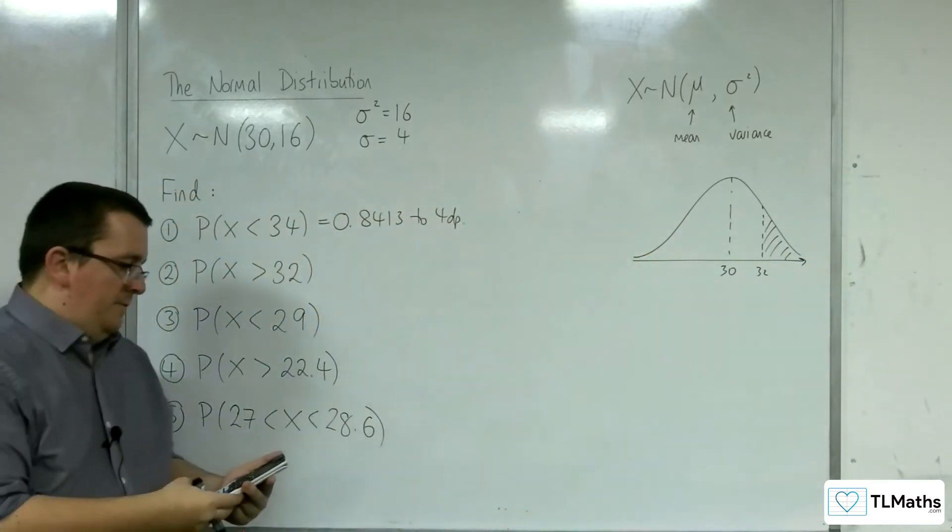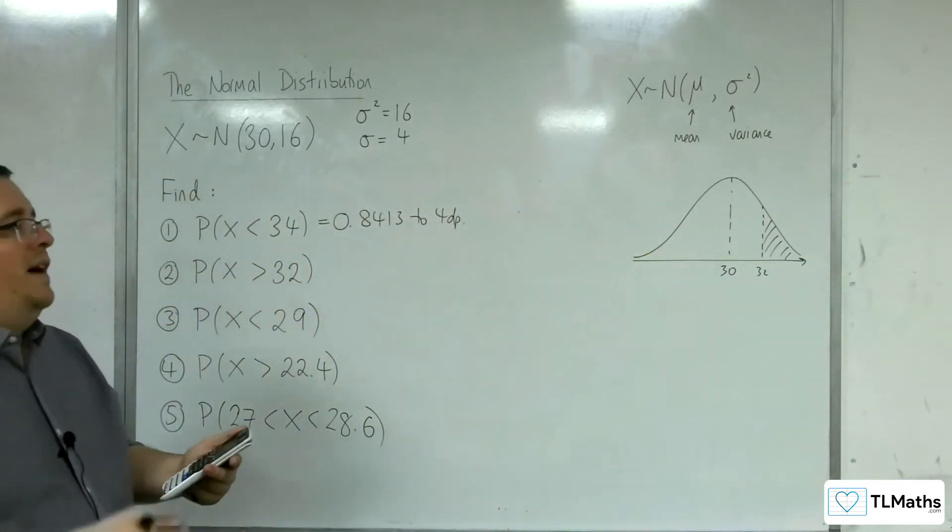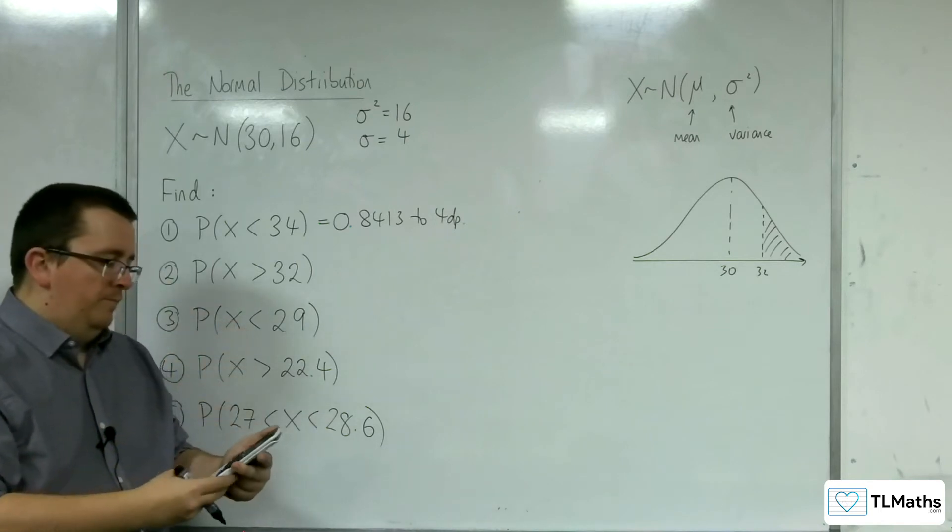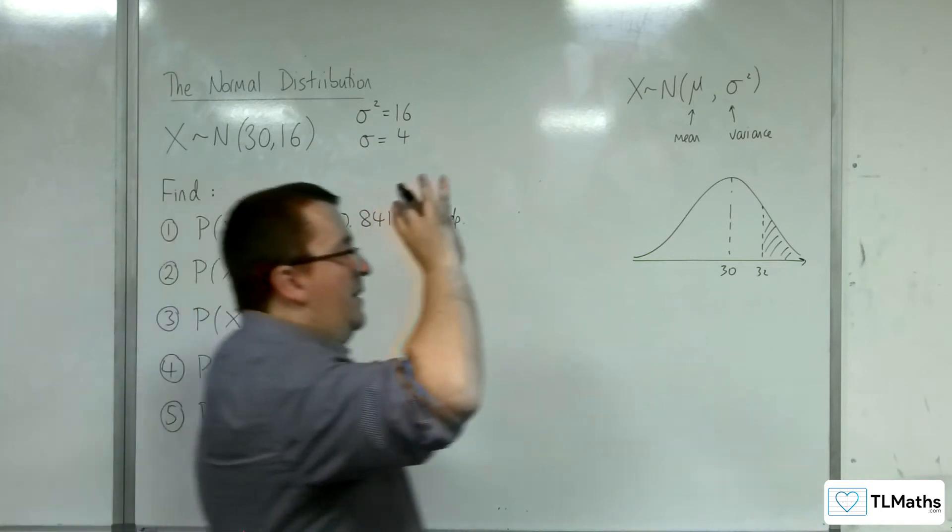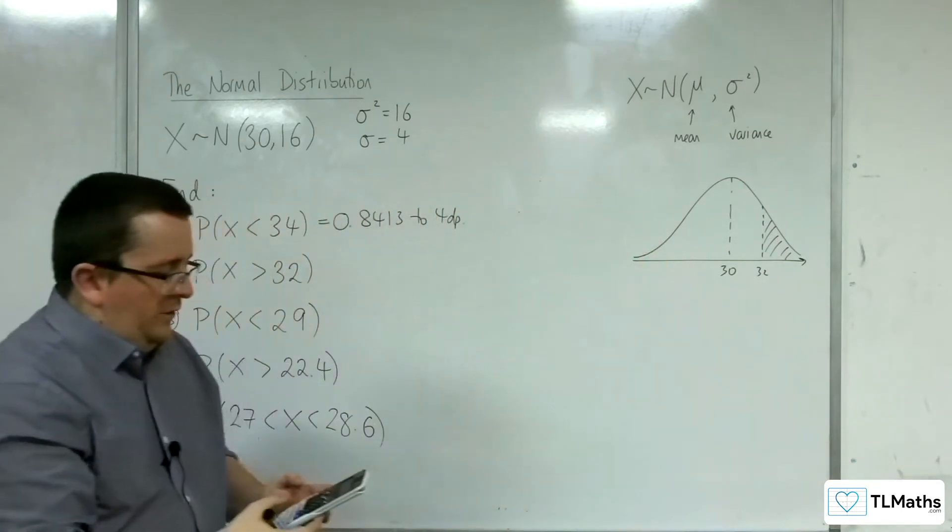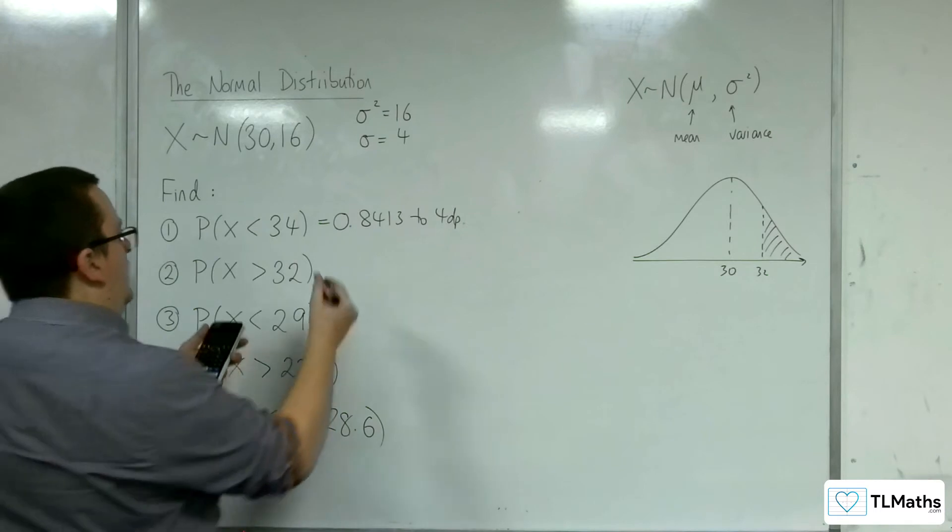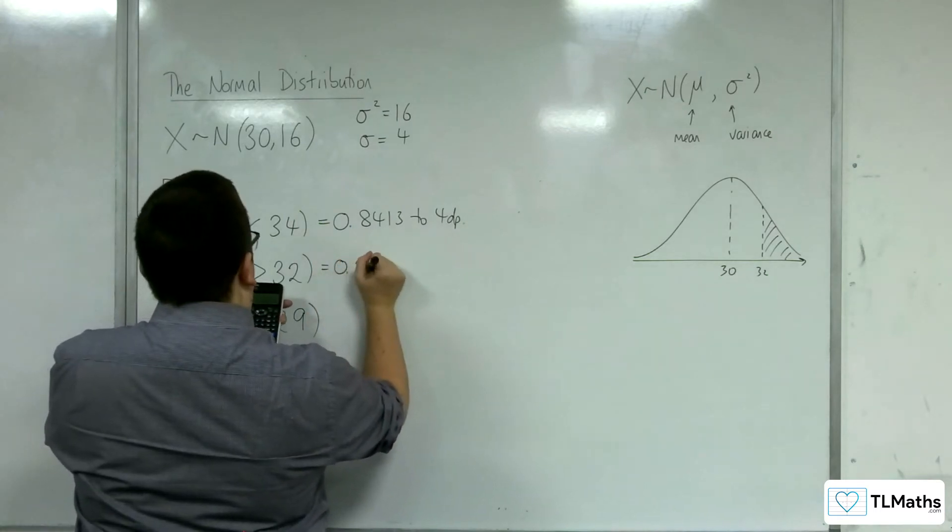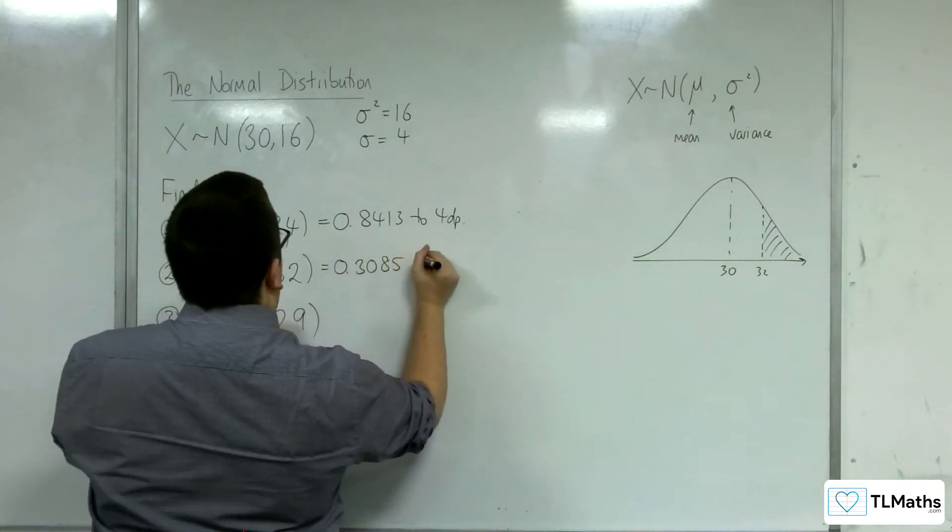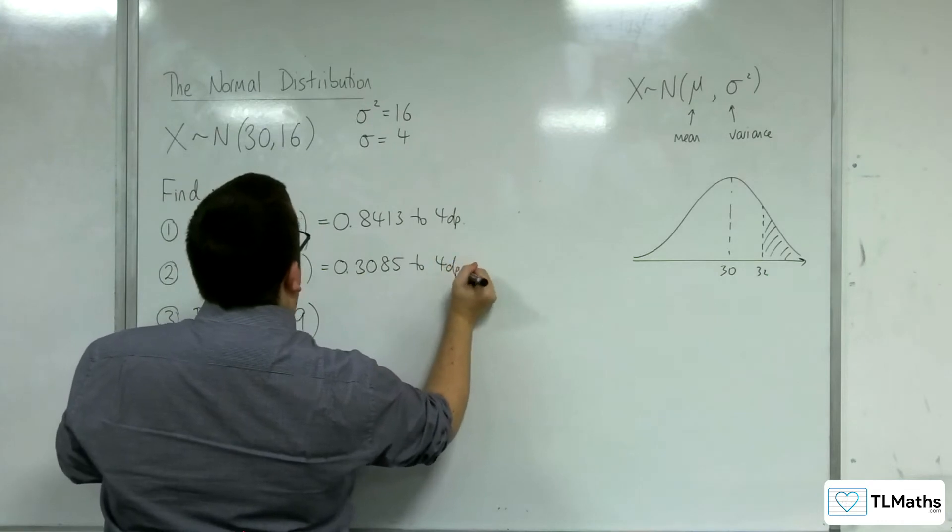Okay, so if we put our lower value in now as 32, the upper value is a nice large number, far enough away down there. So I'm going to put in 1000. Everything else is the same. So we should get 0.3085 to 4 decimal places.